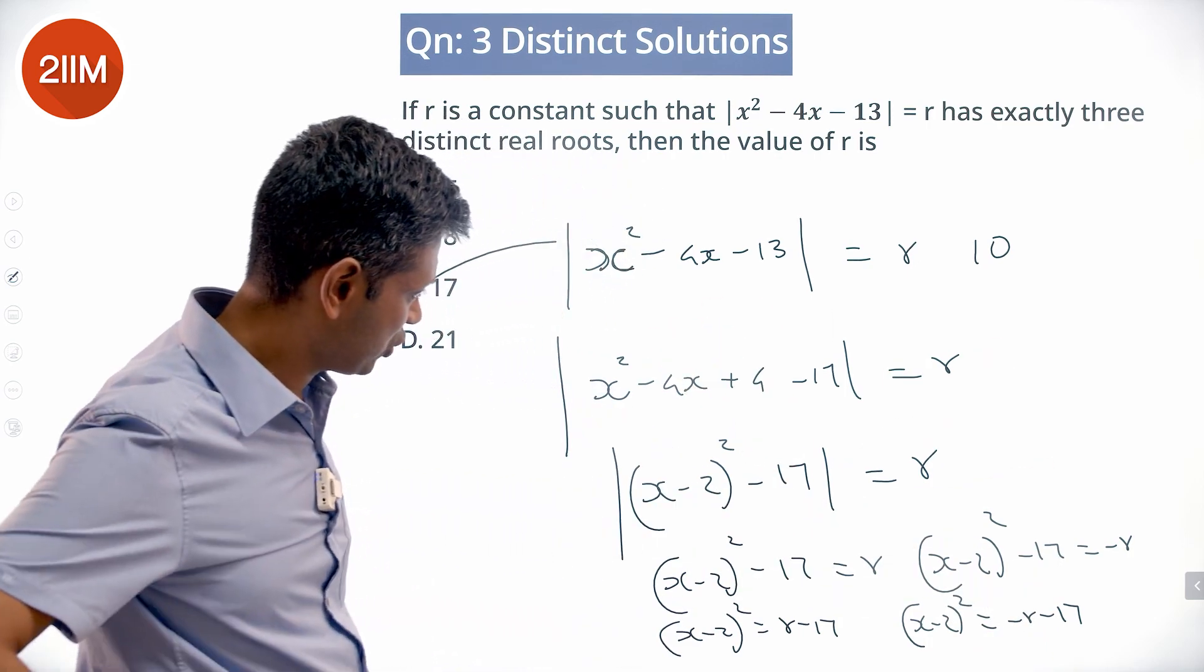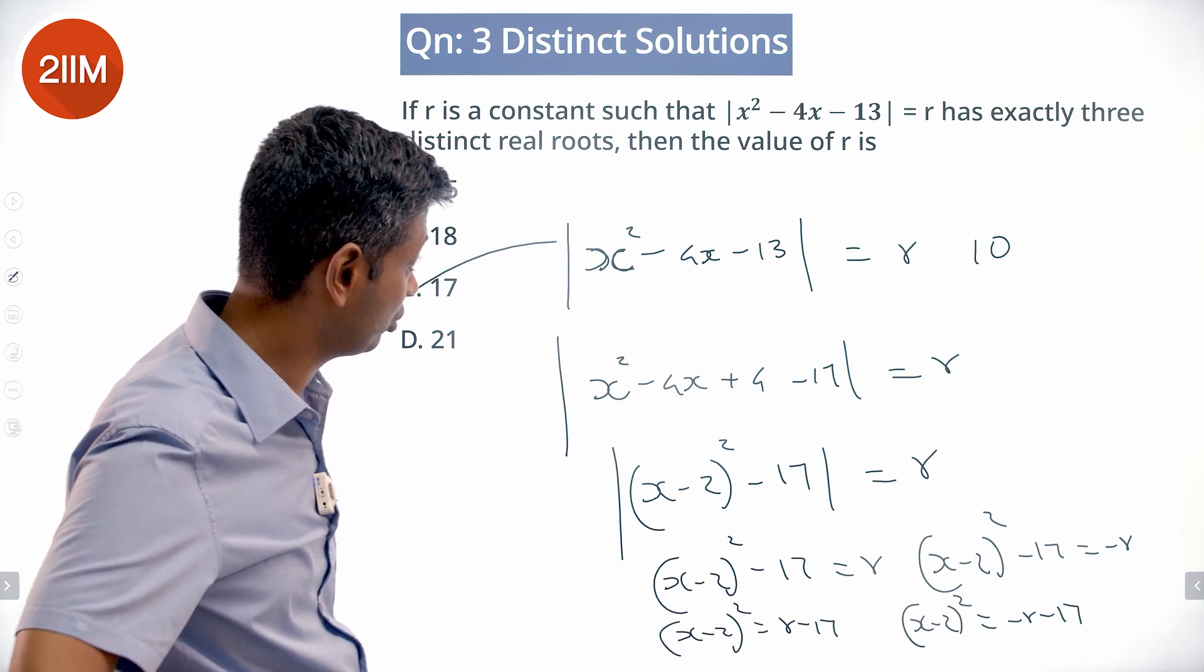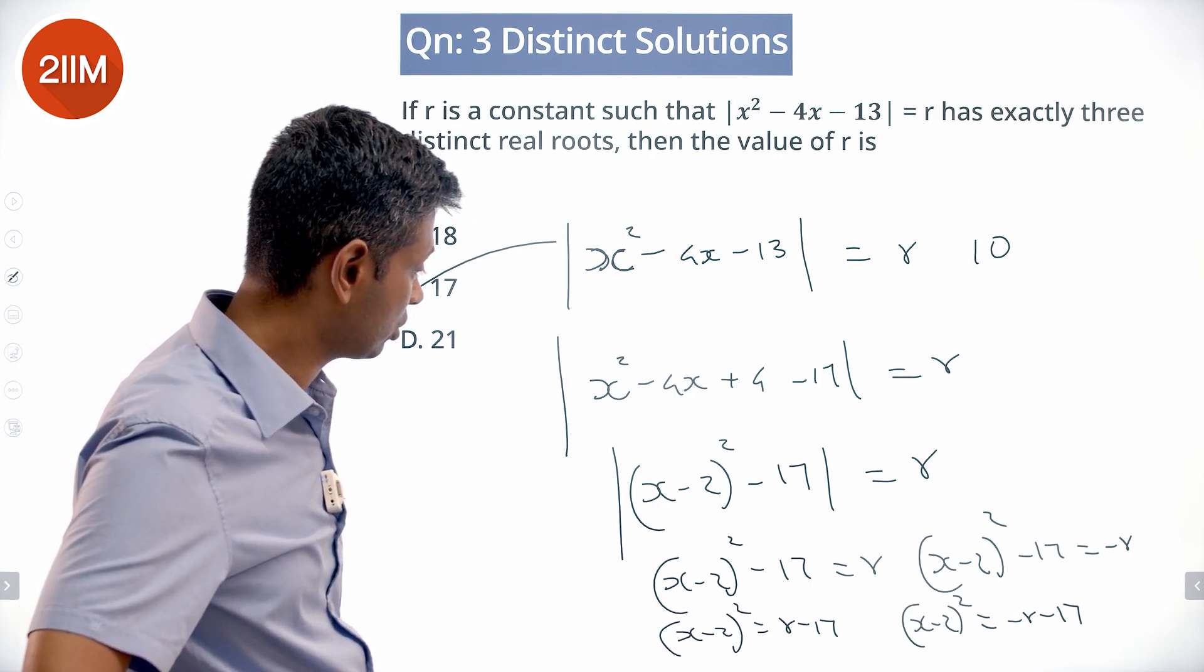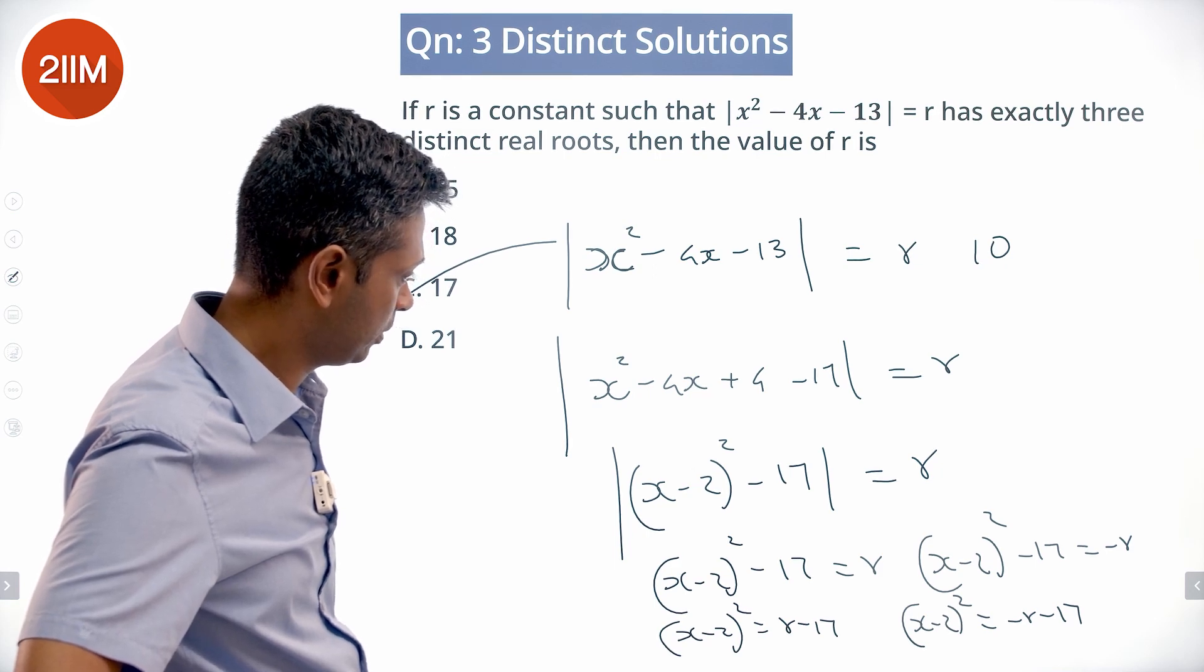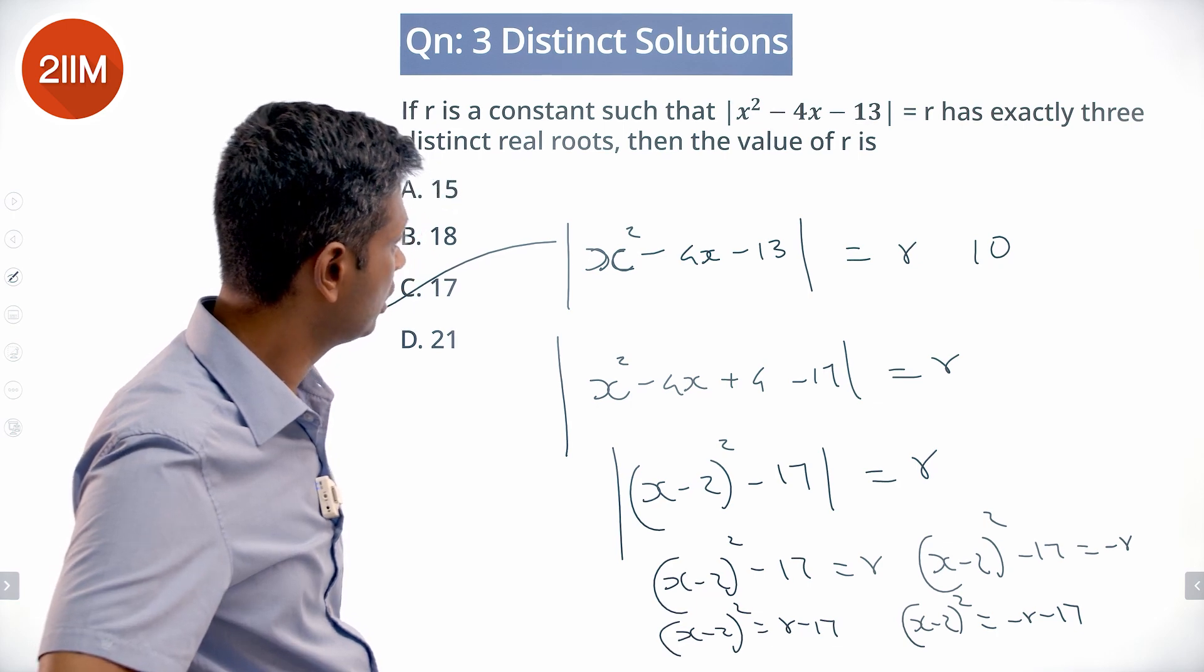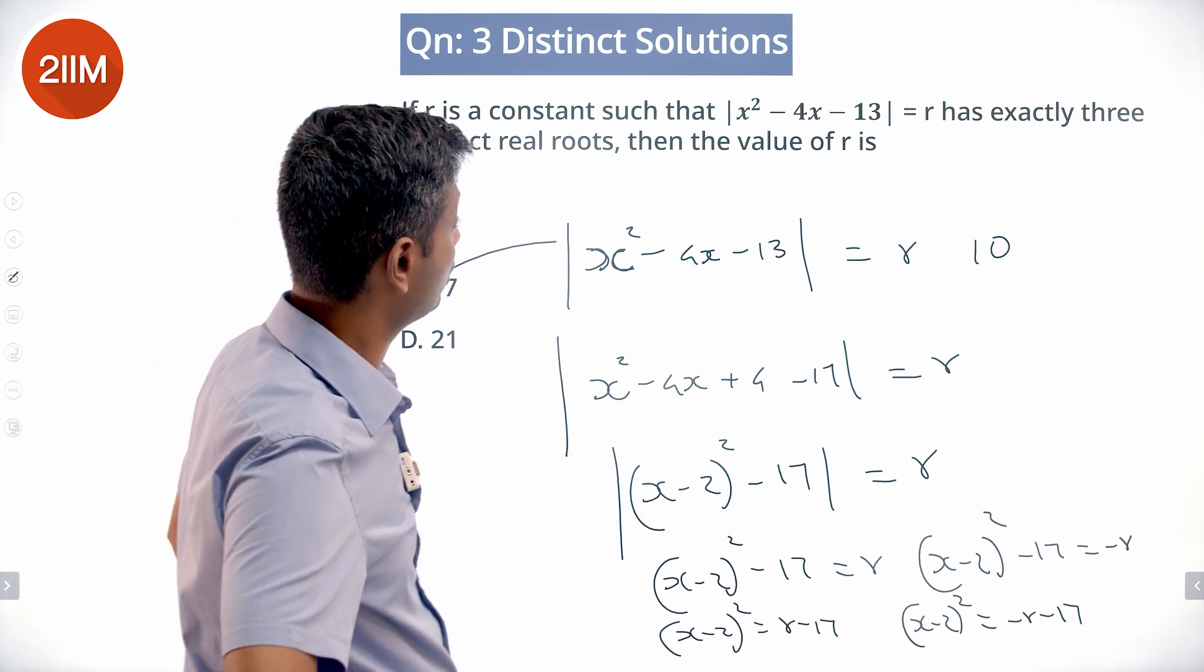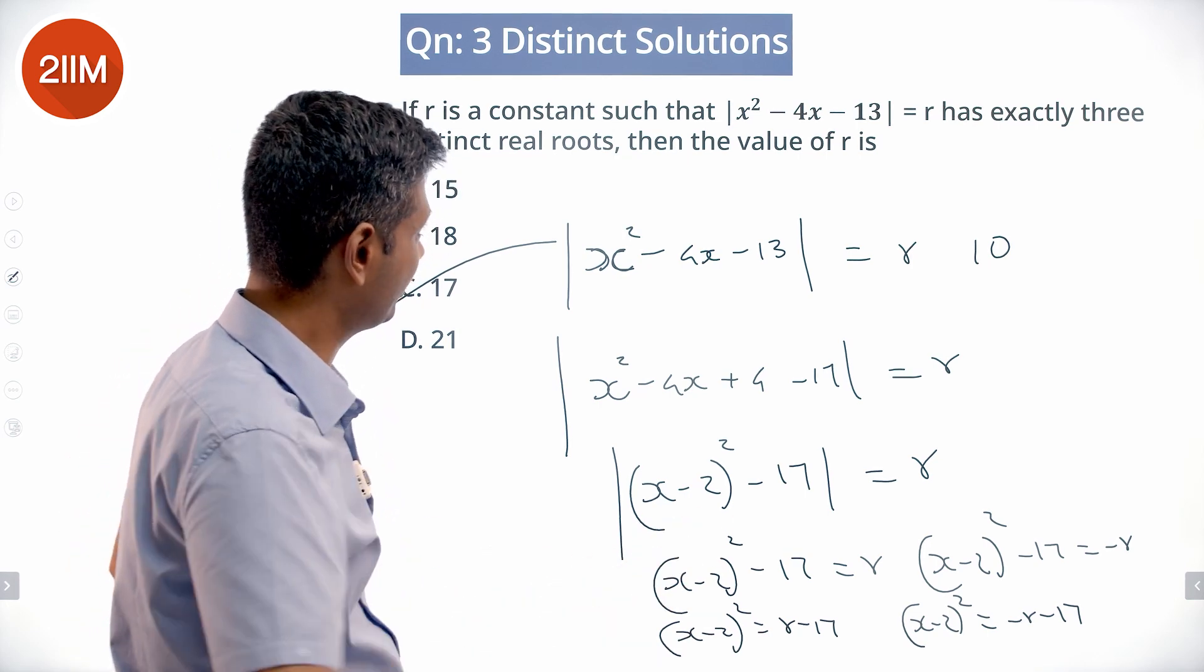I don't know whether that works. Let me just check that out. r = 17 takes us to 0, or (x - 2)² - 17 = -17. Let me check this. We put r = 17. It should go to 0. This goes to 0, x = 2 works.